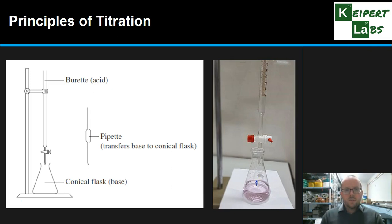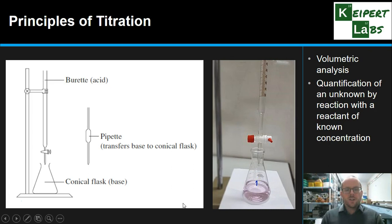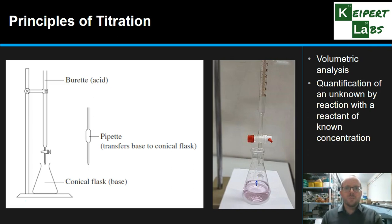So let's have a quick look and remind ourselves of the principles of titration, or volumetric analysis — the alternative name. We're using a chemical reaction between two substances to help quantify or determine the concentration of an unknown one, by reacting it with another substance — a reactant with a known concentration. So we're using something that we do know to react with something that we don't know, in order to not just identify what it is, but to quantify or determine its concentration, its solubility, or some numerical value about it.